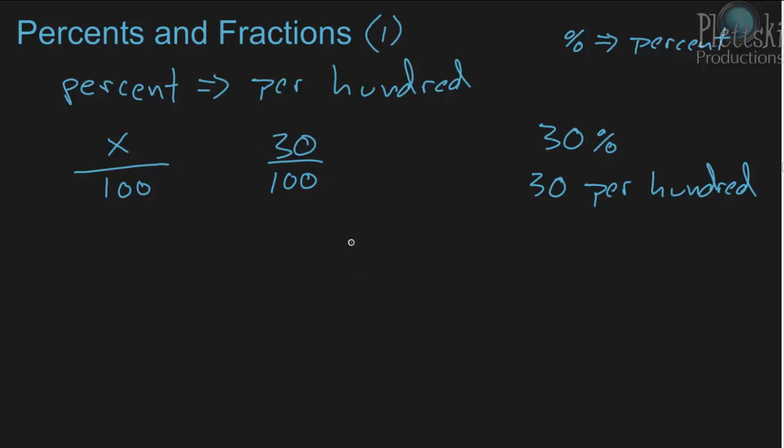So if you had a hundred items of something and you wanted thirty percent of those, that would just mean you want thirty of them.